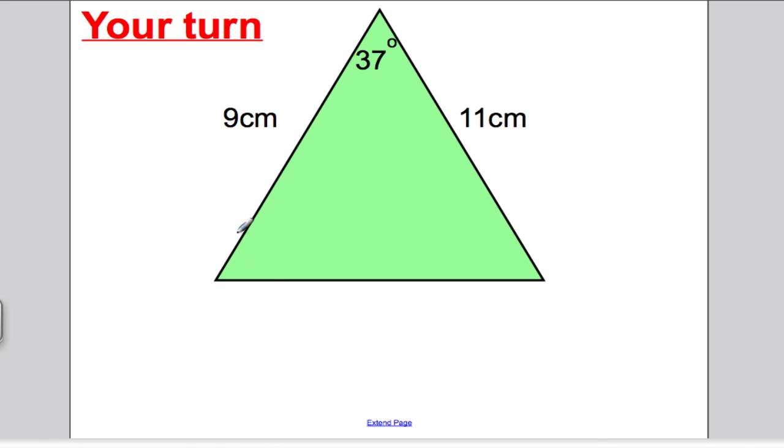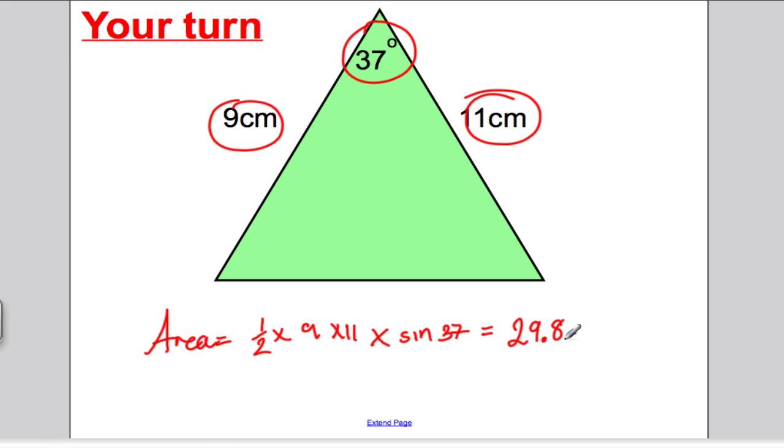So okay, the area of this triangle here, the area, as we said before, is a half times the two sides you know, times 9, times 11, and then times sine of the angle in between, times sine of 37. Again, that's given to you in the formula booklet, so you do 0.5 times 9 times 11 times sine of 37, and you get 29.8 unit centimetre squared, simple as that.